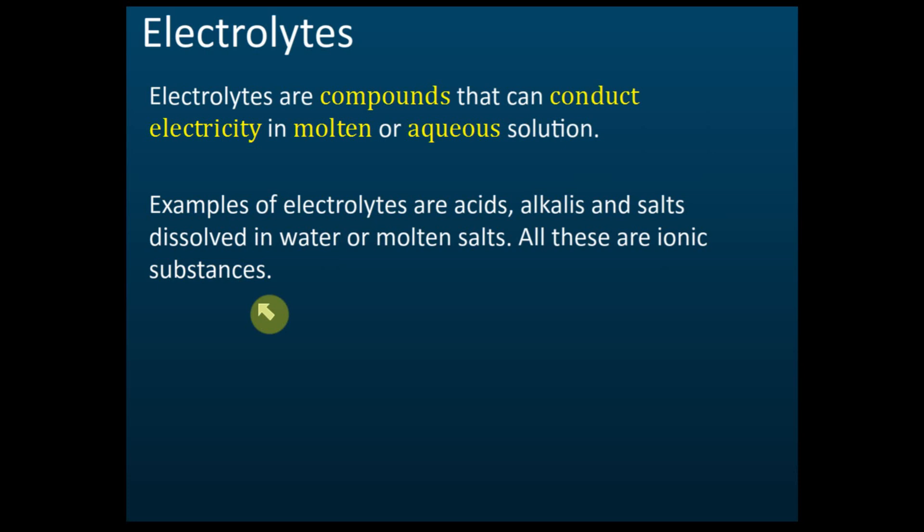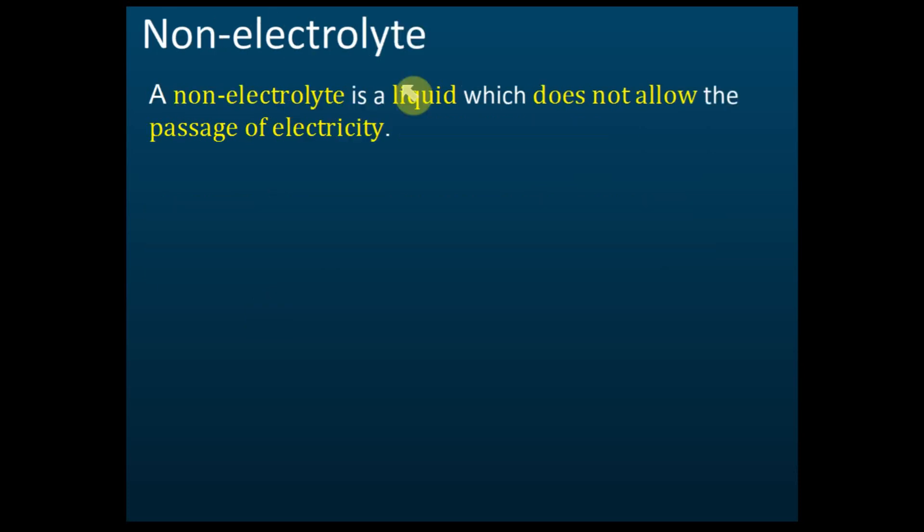If it is a non-ionic compound, you need to check whether it will become an acid or alkali when dissolved in water. If it dissolves in water to become an acid or alkali, then it is an electrolyte. So remember: ionic compounds, acids, and alkalis are electrolytes. Other covalent compounds that are not acids or alkalis are usually non-electrolytes.